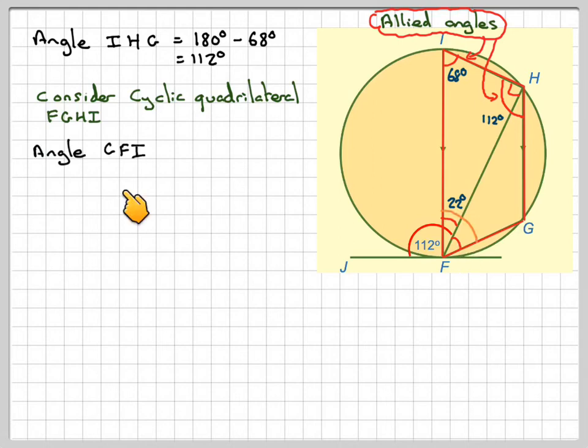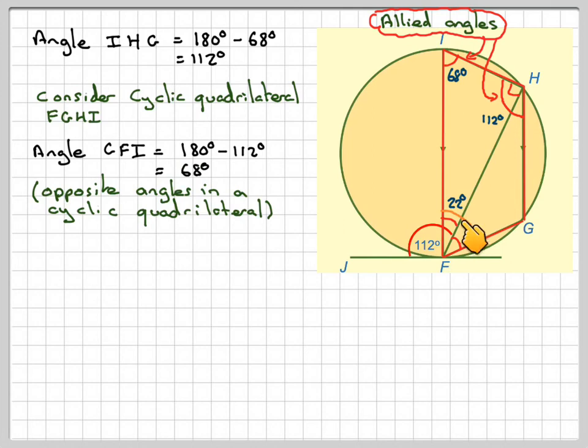Therefore we can find angle GFI, all of this, this orange one here, is going to be 180 minus 112, which, opposite angles of a cyclic quadrilateral, is equal to 68.